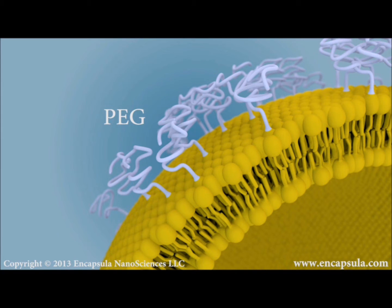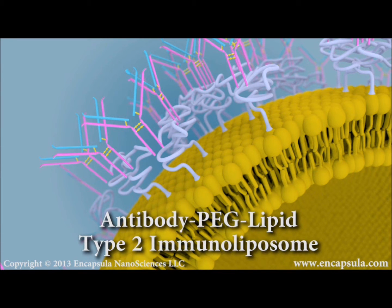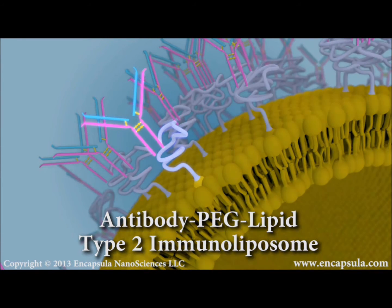The lipid anchor for most lipid derivatives is phosphatidylethanolamine, or PE. For example, PEG is covalently linked to PE, which anchors the polymer to the surface of a liposome. Type 2 immunoliposomes result from the antibody being conjugated to the distal end of the PEG chain.